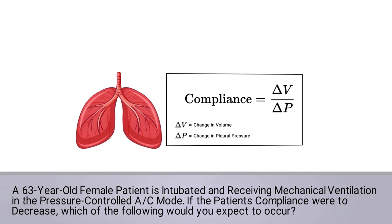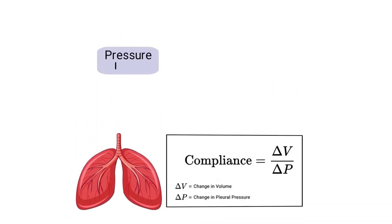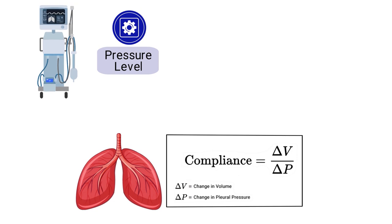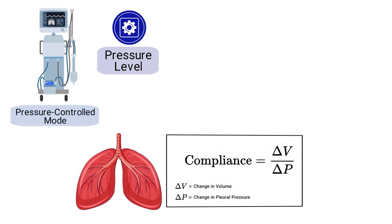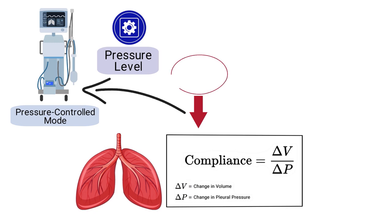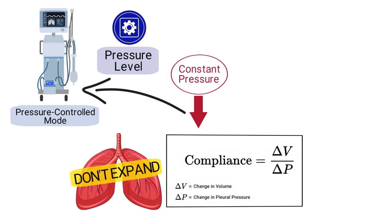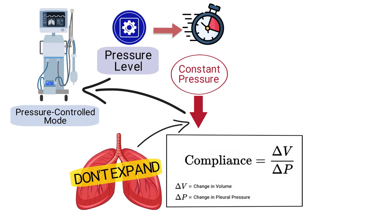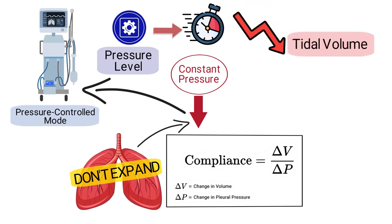You also needed to recognize that the pressure level is preset because the ventilator is in a pressure-controlled mode. If there is a decrease in lung compliance when the ventilator is operating in pressure-control mode, the machine will continue delivering a constant pressure. But since the lungs don't expand as much with decreased compliance, it reaches the preset pressure limit much faster — meaning there will be a decrease in the delivered tidal volume.